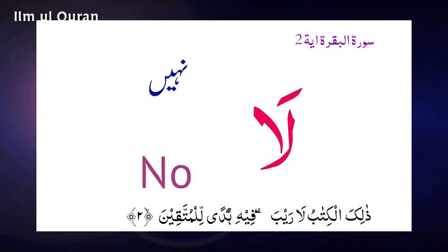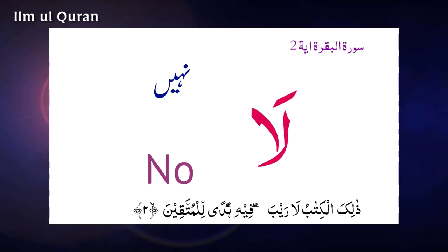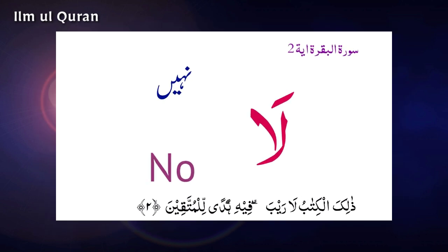First one is لا. لا means no. Surat al-Baqarah, ayah number 2: ذَلِكَ الْكِتَابُ لَا رَيْبَ فِيهِ — This is the book about which there is no doubt.